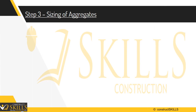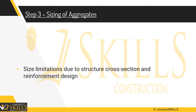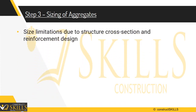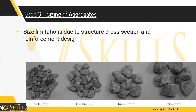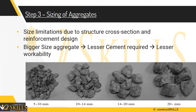Step 3: Estimate the nominal size of the aggregate. The maximum dimension of the coarse aggregate is governed by the limitations of the structure's cross-section and reinforcement design. Increasing the aggregate size is usually more economical as it reduces the amount of cement per unit of volume; however, it may affect the workability of the mix.